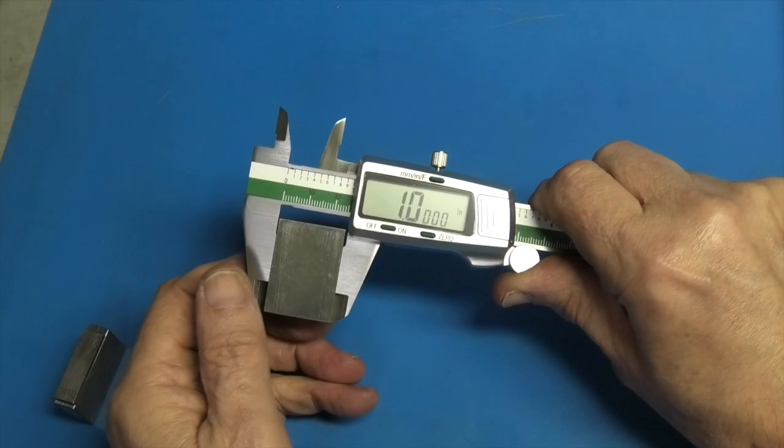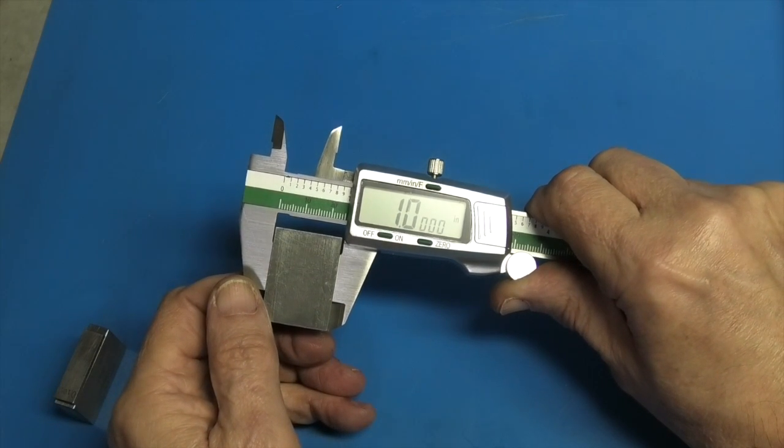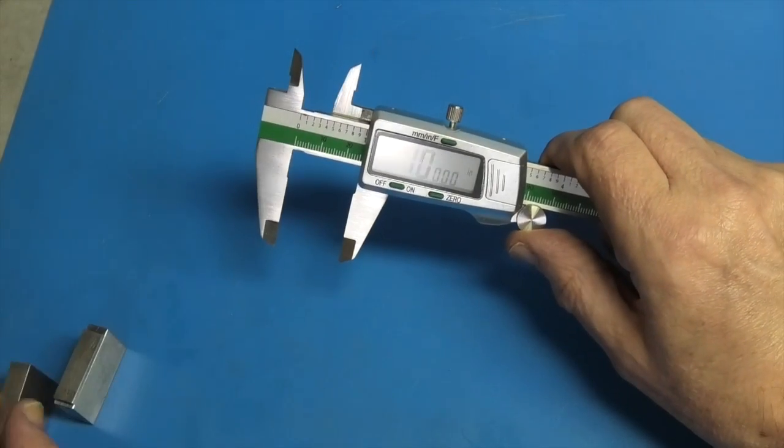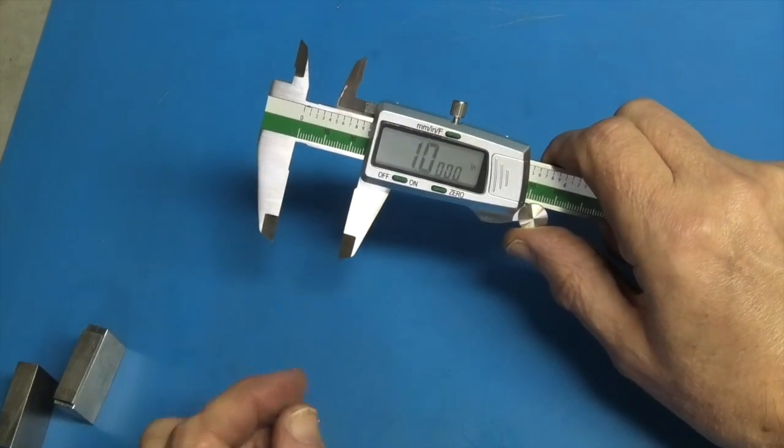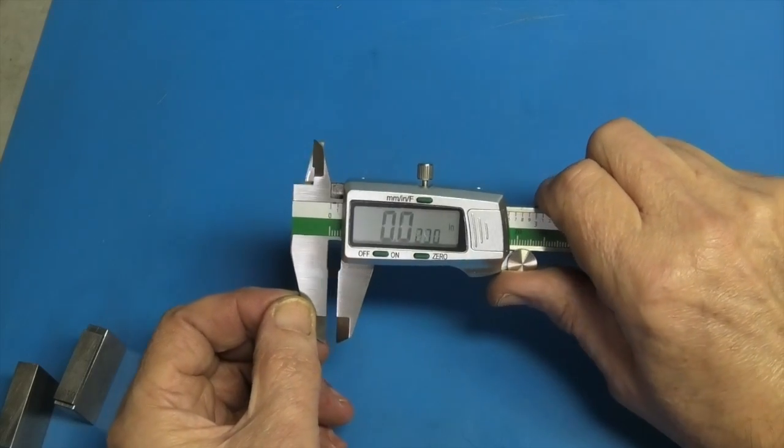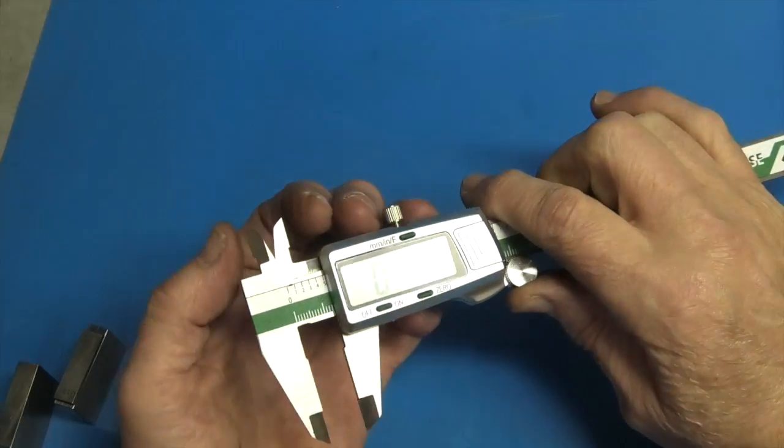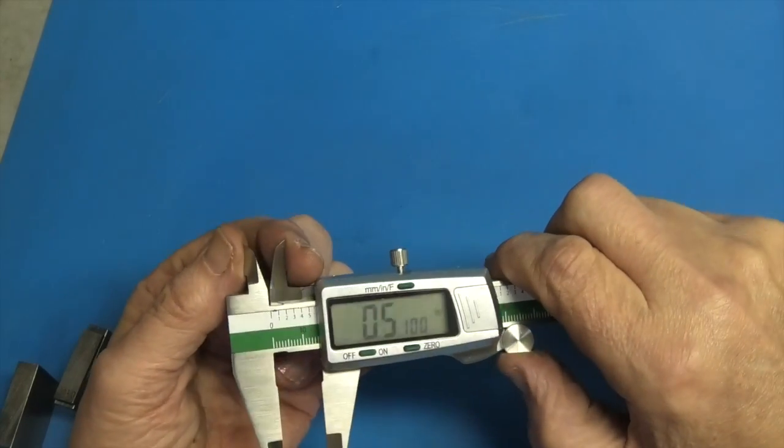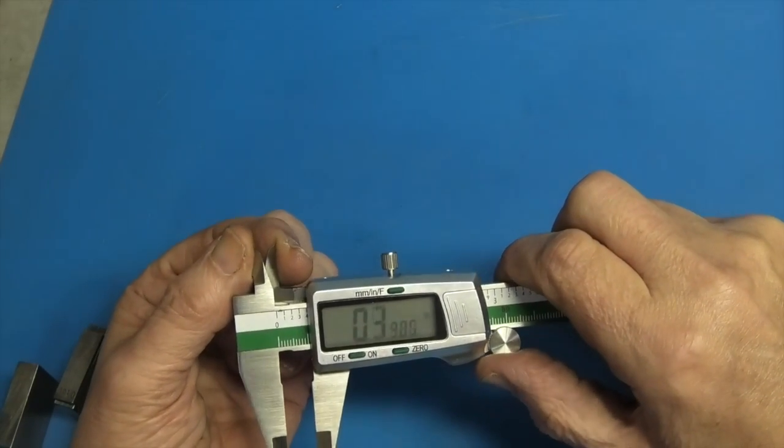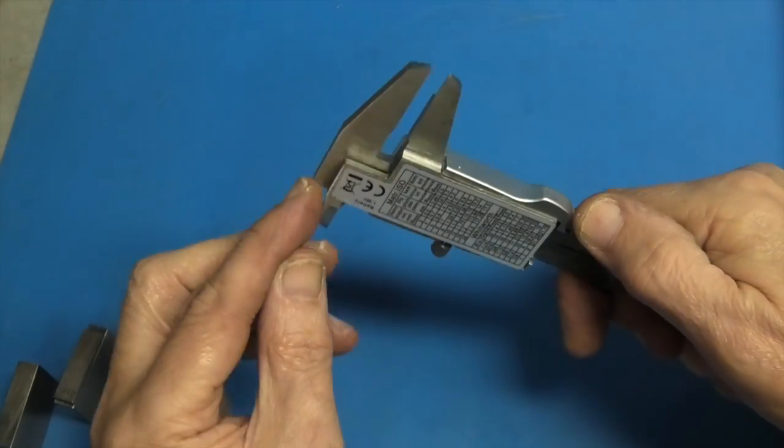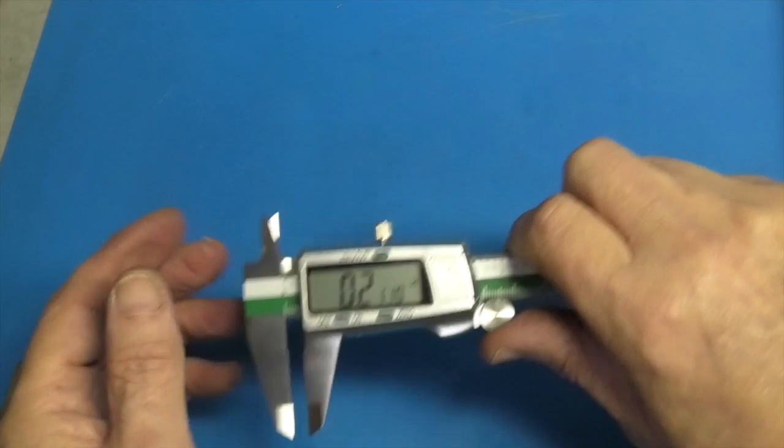Set it to a one inch gauge block. So on this you can measure obviously between the jaws. You can measure a bore diameter on the end here. Between these jaws. Calipers. You can measure depth on the step here. Or on the other end. Depths of a bore.